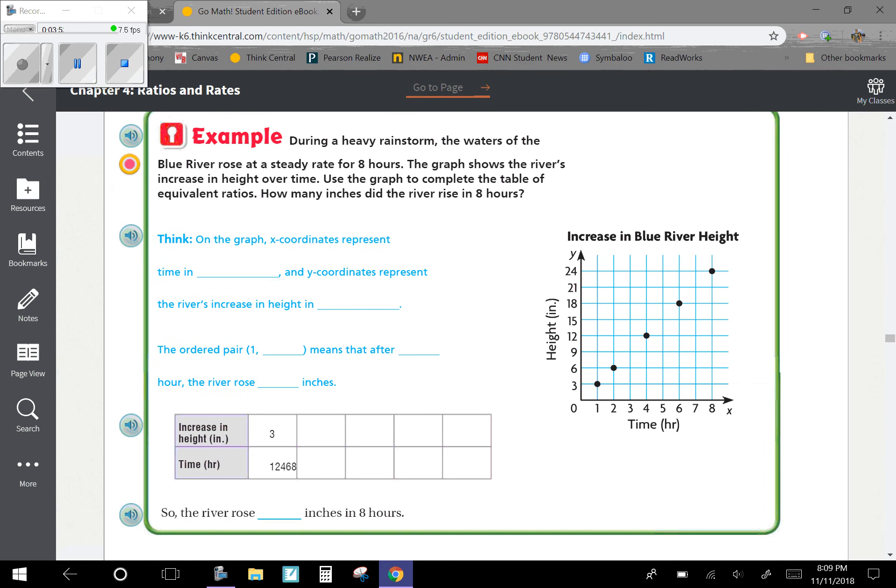Let's look at this next example. During a heavy rainstorm, the waters of the Blue River rose at a steady rate for 8 hours. The graph shows the river's increase in height over time. Use the graph to complete the table of equivalent ratios. How many inches did the river rise in 8 hours?